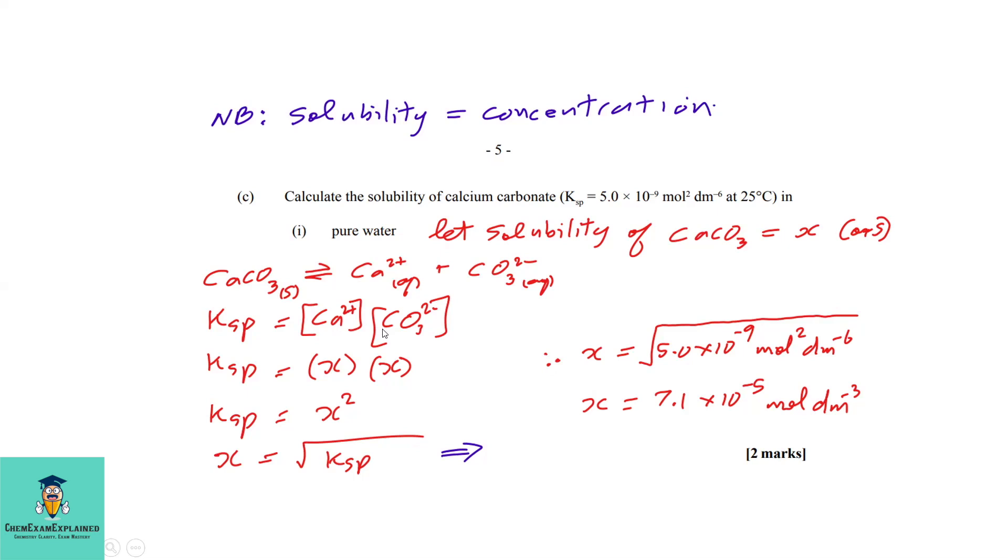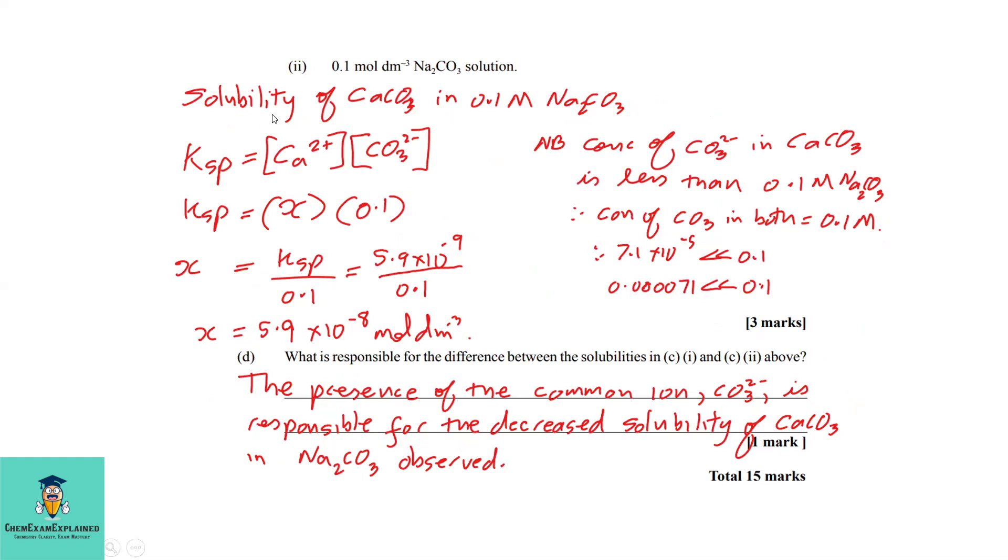Given the Ksp, we can now find the concentration of the ions in the saturated solution. We write Ksp = x × x, because the concentrations are unknown. We make x the subject: x = √Ksp. We plug in the information and that gives us x = 7.1 × 10⁻⁵ mol/dm³.